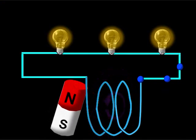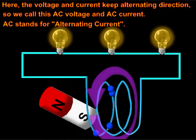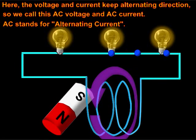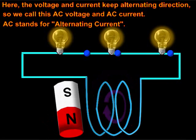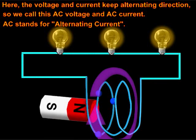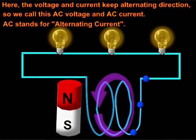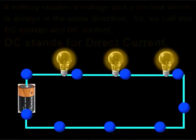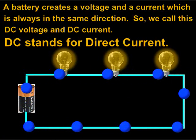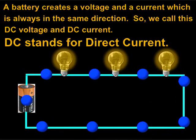In a power plant, the voltage and current keep alternating direction, so we call this AC voltage and AC current — AC stands for alternating current. A battery, by contrast, creates a voltage and current which is always in the same direction, so we call this DC voltage and DC current — DC stands for direct current.